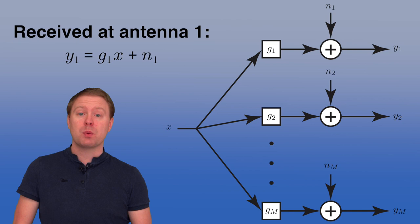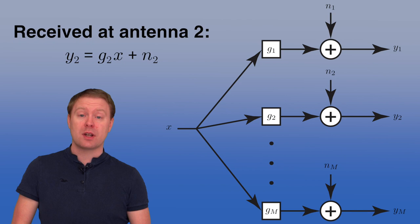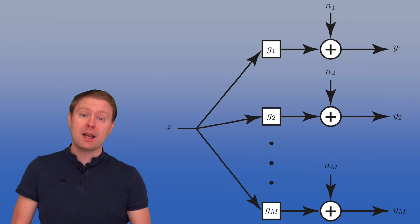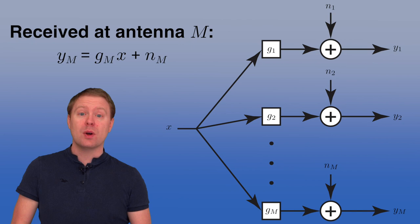We add N1, which is the noise at the first antenna. For the second antenna, Y2 equals X multiplied with G2, the channel response to the second antenna, plus N2, the noise at that antenna. Each of these noise terms is independent, complex Gaussian distributed with variance N0. This continues all the way down to YM, received at the Mth antenna.